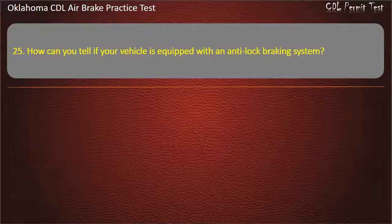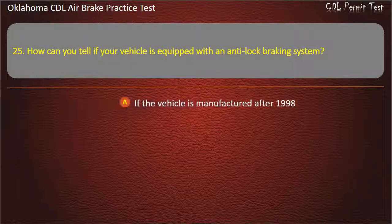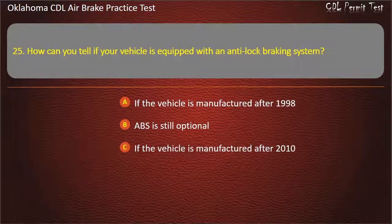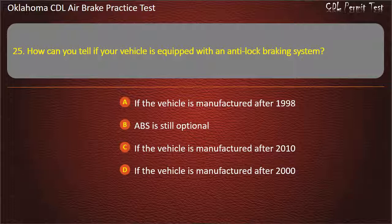Question 25. How can you tell if your vehicle is equipped with an anti-lock braking system? If the vehicle is manufactured after 1998; ABS is still optional; if the vehicle is manufactured after 2010; or if the vehicle is manufactured after 2000. Answer: If the vehicle is manufactured after 1998.